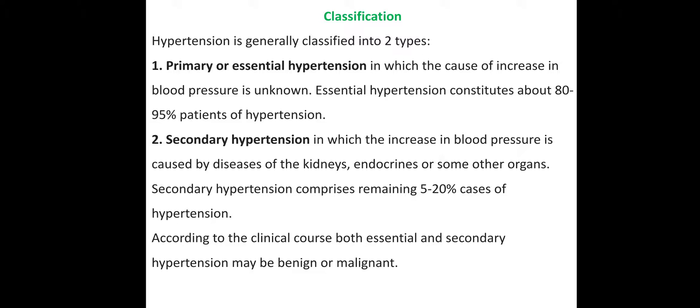Worldwide, 80 to 93% of hypertension cases are primary hypertension. Secondary hypertension occurs due to disorders in specific organs — endocrine disorders, kidney disorders, and other organ-related disorders.